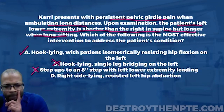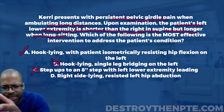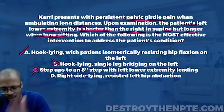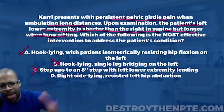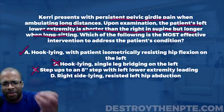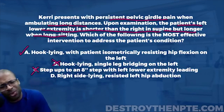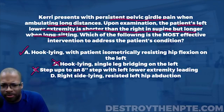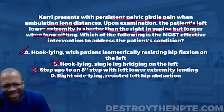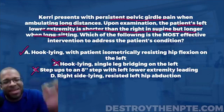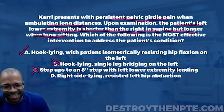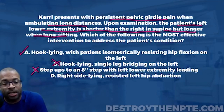Answer D is right side lying, resisted left hip abduction. The patient is lying on the right side and performing hip abduction on the left. The problem is that hip abduction is in the frontal plane, and this is a sagittal plane problem. That alone eliminates D - it's not even addressing the right plane of movement. We can eliminate that one quickly.